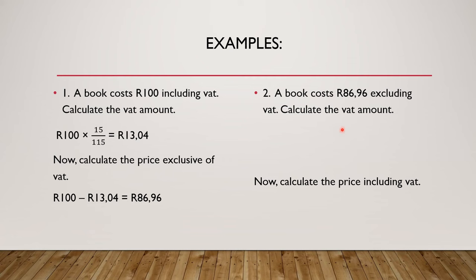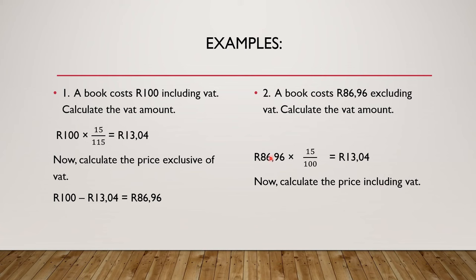Example 2: a book costs 86 rand 96 cents excluding VAT. Calculate the VAT amount. So because the price is excluding VAT, to get the VAT amount, I'm going to multiply by 15. So I'll take the price excluding VAT, multiply by 15 over 100 and I've got 13 rands 4 cents. Now calculate the price including VAT. So we'll take 86.96 plus 13.04 and we're back to 100 rands.